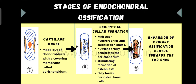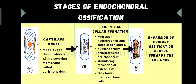The first stage is the cartilage model formation. Here I have a simple representation where you can see a blue color framework — a model of the bone — called the cartilage model. In the center you can see an orange color area that is the primary ossification center, which we will discuss in further stages. First there will be a cartilaginous model made out of chondroblasts, with a covering membrane called the perichondrium — the outer membrane covering of the cartilaginous model.